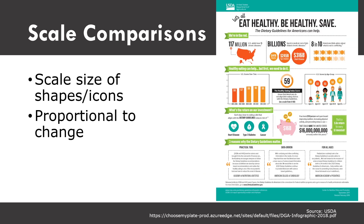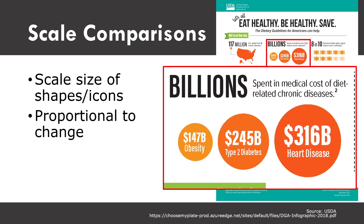Another very common infographic technique is to create scale comparisons using shapes, icons, or fonts to show difference in size, change, or gravity. When talking about the billions spent in medical costs of diet-related chronic diseases, you can see a scale comparison where obesity is at the lower end and heart disease is much much larger. You'll notice that not only the shapes scale proportionally, but also the fonts in size — this is another design cue that reinforces how much more impactful heart disease is compared to obesity.